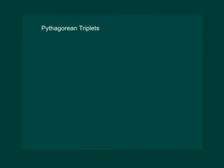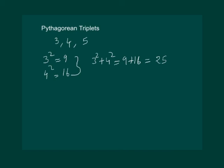Let us now define Pythagorean triplet. Consider numbers 3, 4 and 5. We have 3 square is equal to 9, 4 square is equal to 16. Let's add 3 square plus 4 square will give us 9 plus 16, which is equal to 25. And we know that 25 is square of 5.